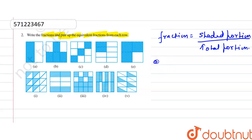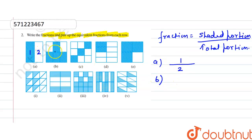In the first figure you can see there are two total parts, so total is 2 and the shaded one is 1, giving us 1/2. For figure B, the total is 1, 2, 3, 4, 5, 6 and the shaded ones are 1, 2, 3, 4. So total is 6 and shaded is 4.